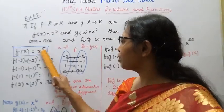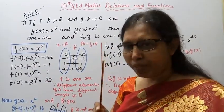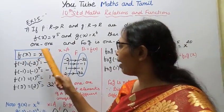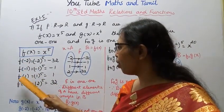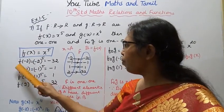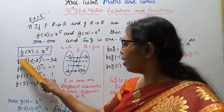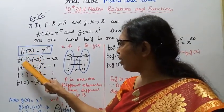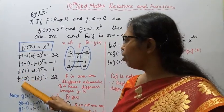f(x) is x^5. Let's take some values for x: minus 2, minus 1, 1, 2. For these x values, let's find f(x).